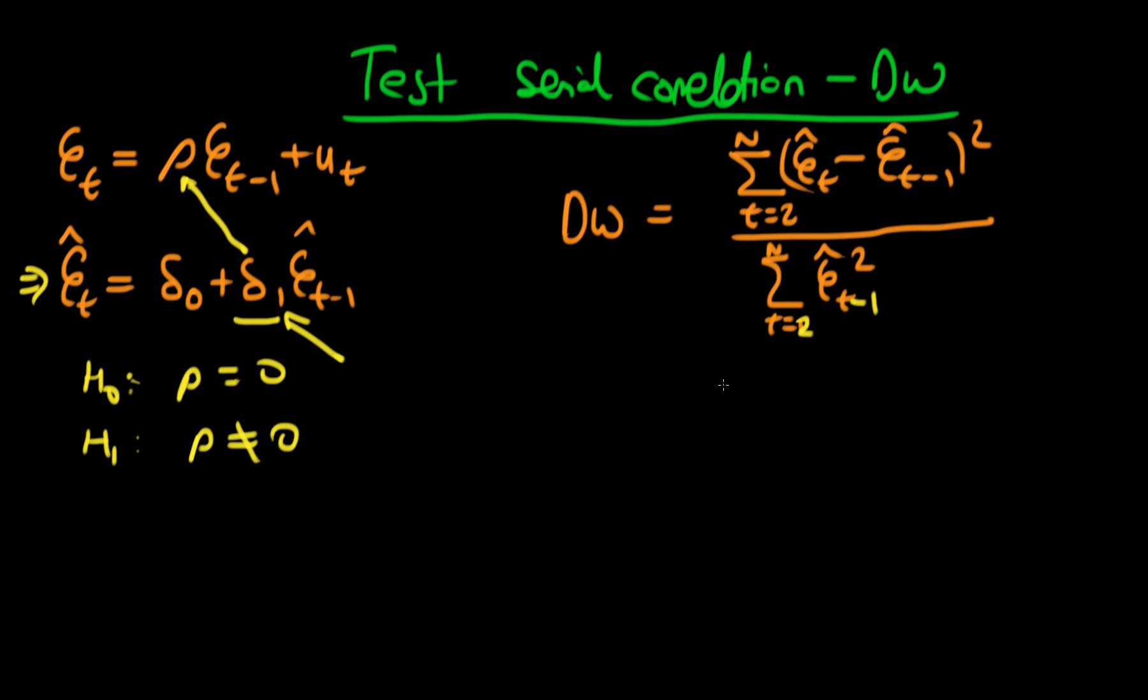If we do that, we can sort of think about there as being some sort of approximate relationship between our value of delta-1 which we would get from this sort of equation, this auxiliary equation, and the Durbin-Watson statistic.